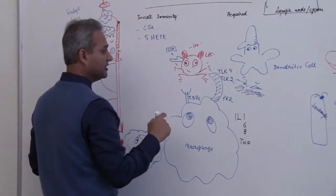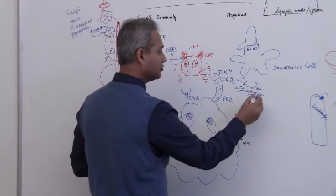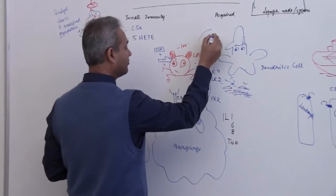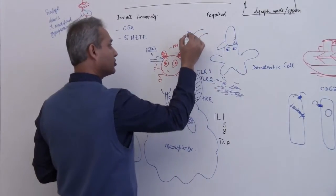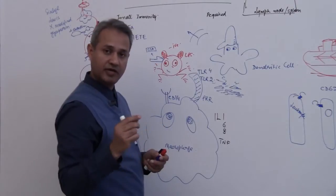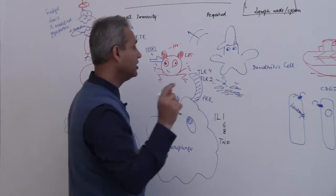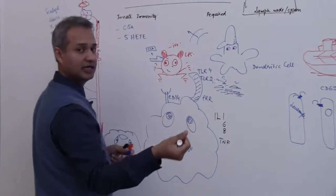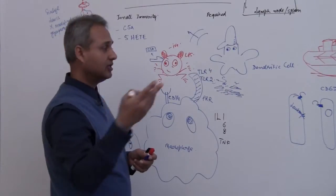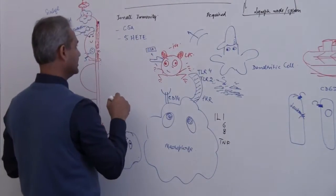5-HETE is from the arachidonic acid pathway. So what happens is that when the cell membrane phospholipids are broken down, we have a cyclooxygenase pathway and we have a lipoxygenase pathway. These pathways give rise to bradykinins and the leukotrienes and one of the components is 5-HETE.